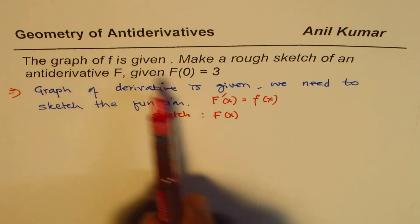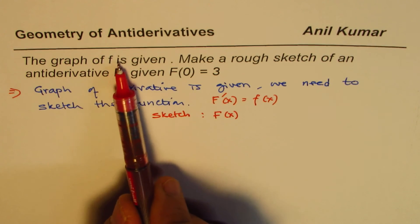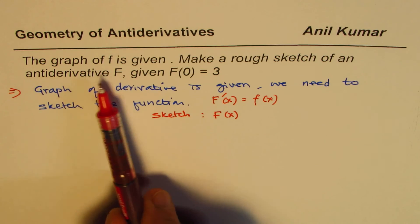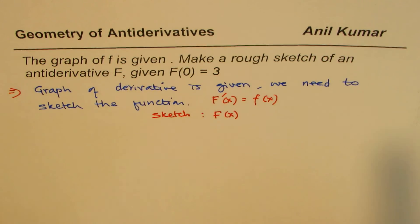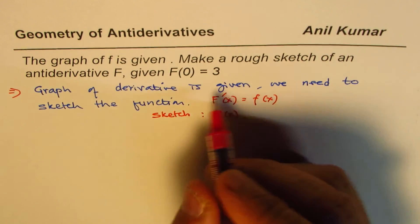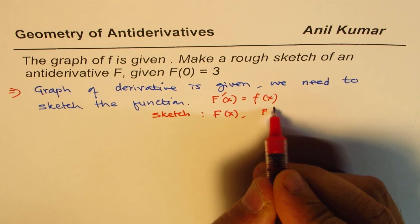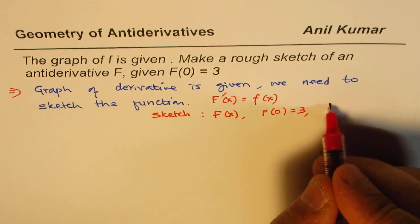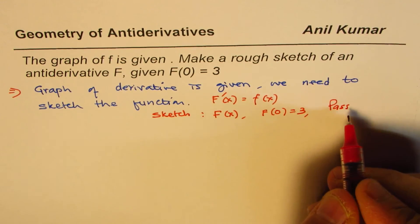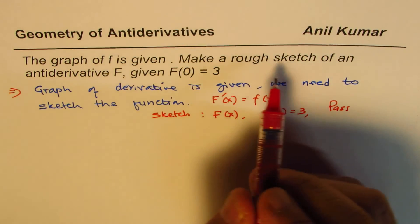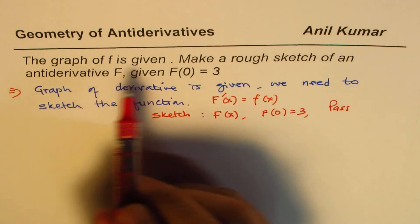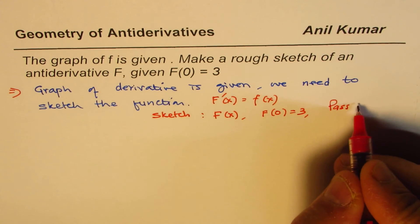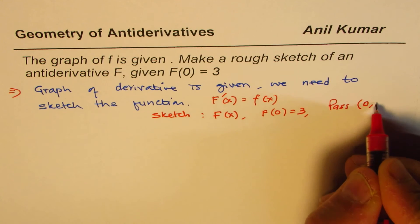Graph of f is given; make a rough sketch of an anti-derivative F. One more thing: the initial condition is F(0) = 3, which means this graph passes through the point (0, 3).